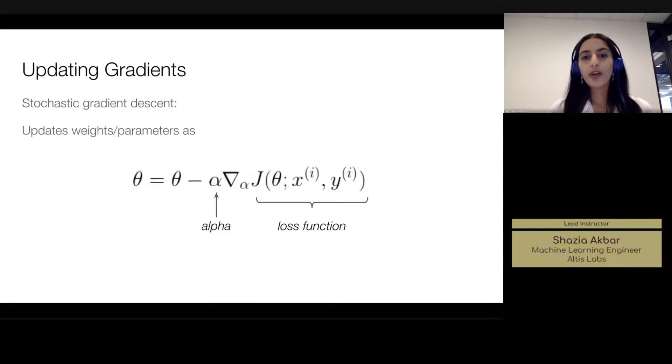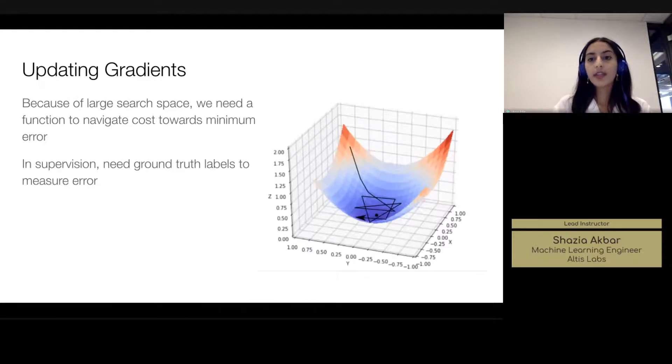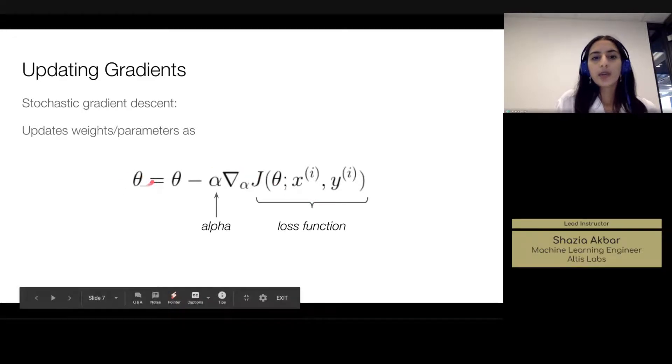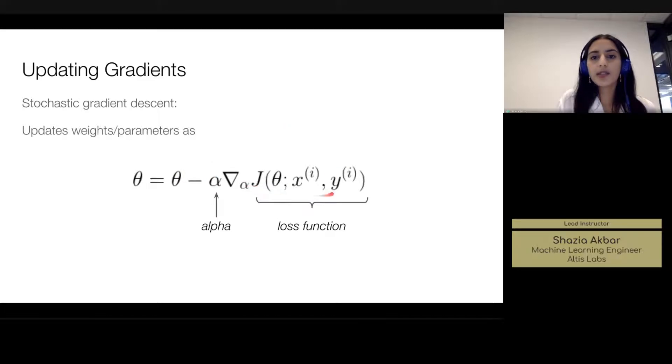One popular way of navigating this particular high search space is by using a function like stochastic gradient descent, which is shown here where theta is the parameters within our network, and we can see they're adjusted using this descent function here, which is also weighted by an alpha term which is how fast we're learning essentially. And then we have our loss function here which is taking the parameters, the x input and the y labels that were provided during training.